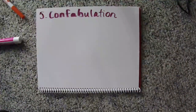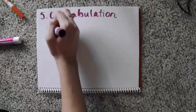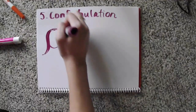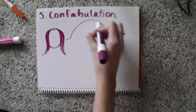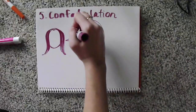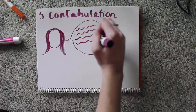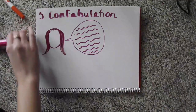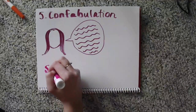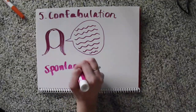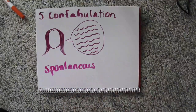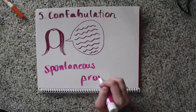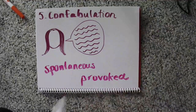Confabulation refers to when an individual makes up experiences or stories. They often retell them with great detail and the stories seem very plausible. Confabulations can be provoked when the individual with RHD is asked questions, or they can also be spontaneous.